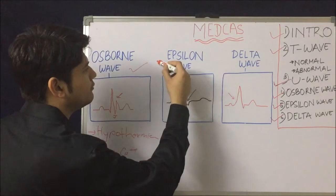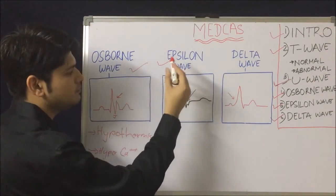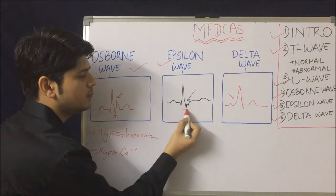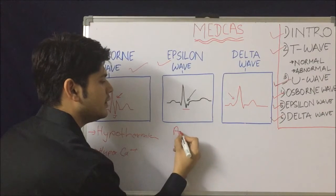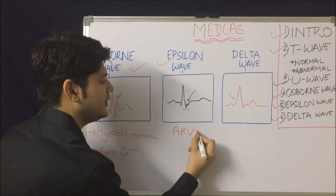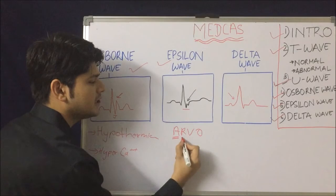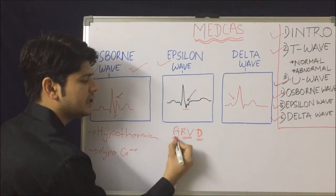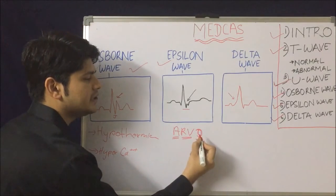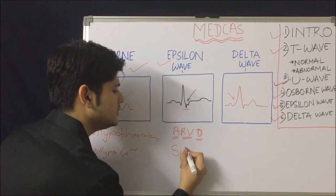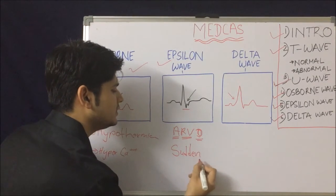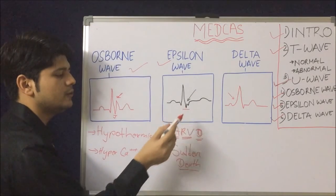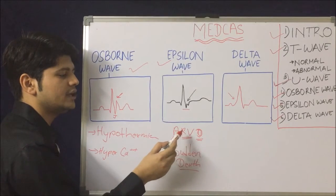Now we will understand something called the epsilon wave. The epsilon wave is a positive deflection just after the QRS complex. This epsilon wave is seen in ARVD — arrhythmogenic right ventricular dysplasia. ARVD is one of the causes of sudden cardiac death. So the epsilon wave is seen in the condition called ARVD.